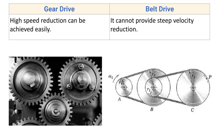High speed reduction can be achieved easily in gear drive. By changing the diameter of the driver or driven element, we can change the rotational speed. In gear drive, speed reduction from 1:1 to 1:100 can be achieved. Belt drive cannot provide steep velocity reduction — it can reduce the velocity from 1:1 to 1:4 only.